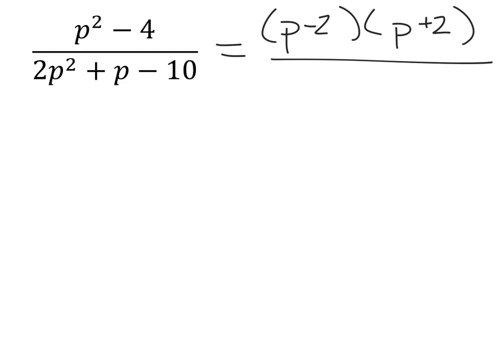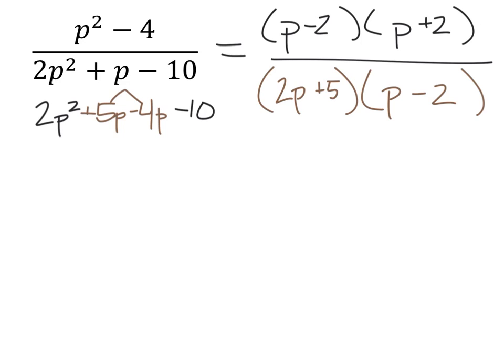And we'll divide this by factoring 2p² plus p minus 10. So if we look at this by grouping, we would break the 1p up into 5p minus 4p, and then after we factored by grouping, we would find that it factors out into 2p plus 5 and p minus 2.